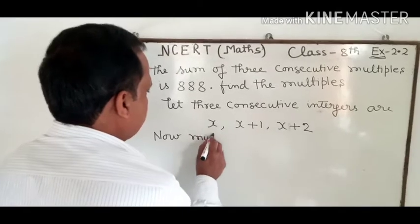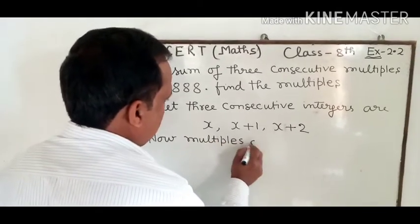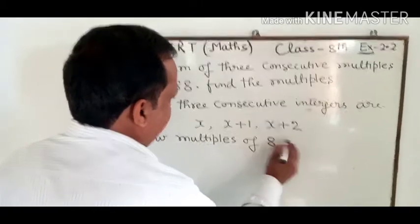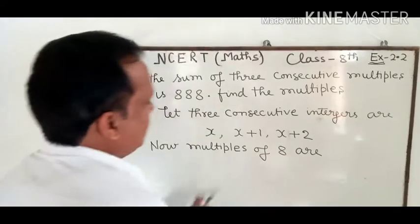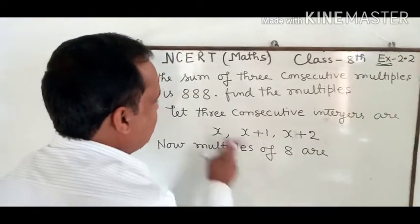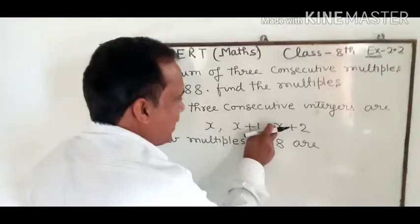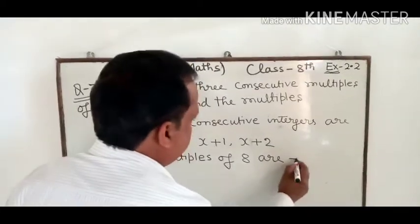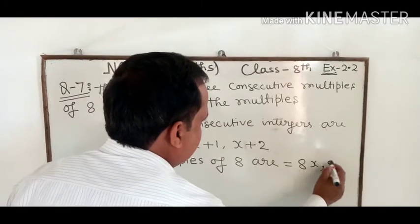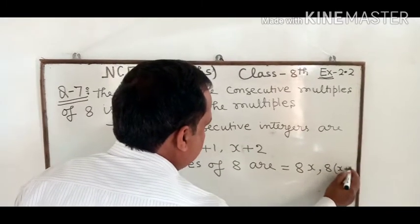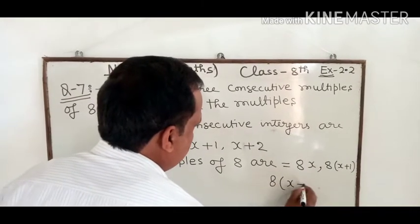Now multiples of 8 - we need multiples of 8. Multiple means multiply with this number, multiply with this number, and multiply with this number. So multiples are equal to 8x, 8 times x plus 1, and 8 times x plus 2.